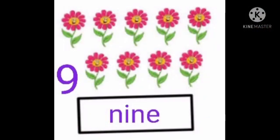Repeat with me. Next one. How many flowers are here? Count with me: 1, 2, 3, 4, 5, 6, 7, 8, 9. Nine flowers! What is the spelling of 9? N-I-N-E, 9.